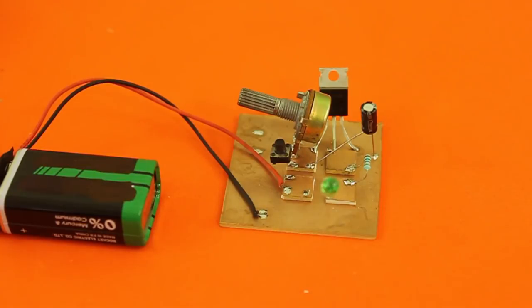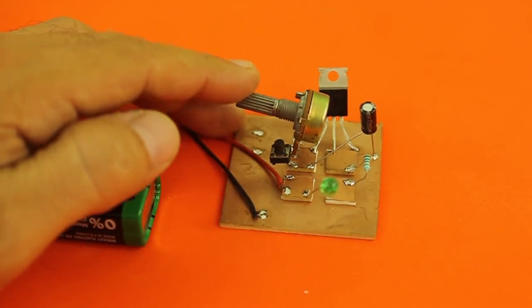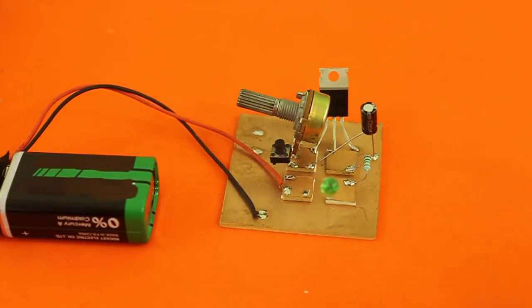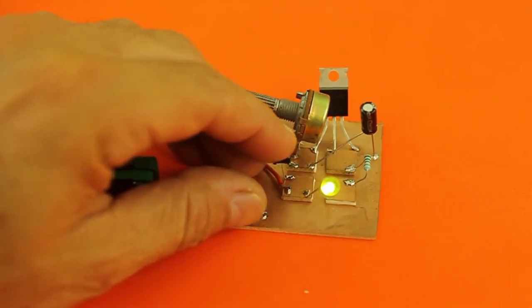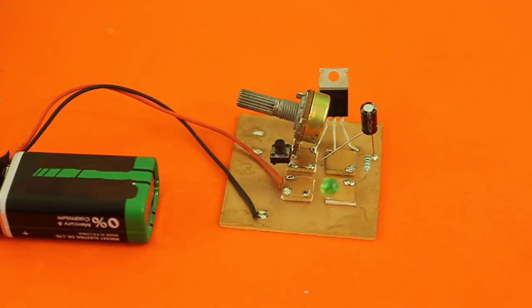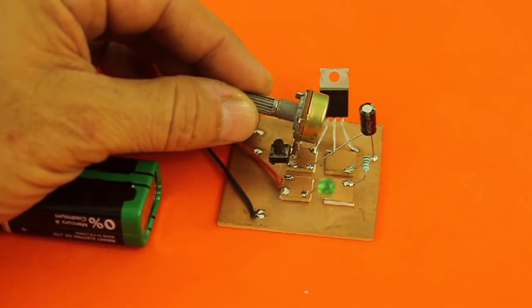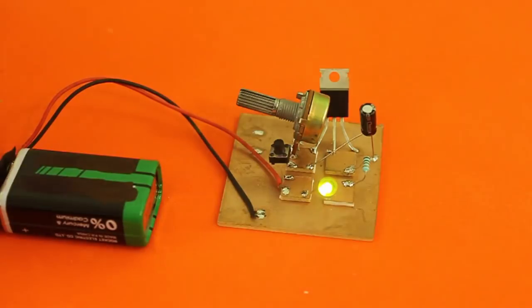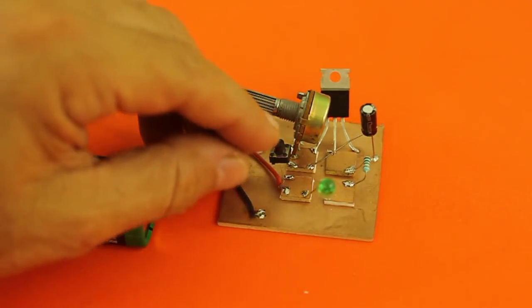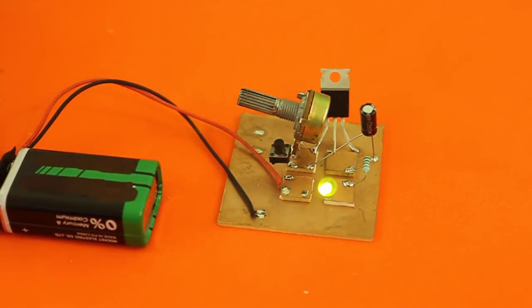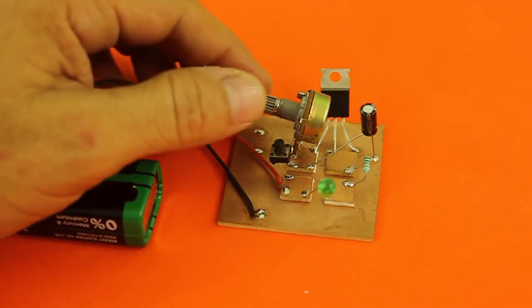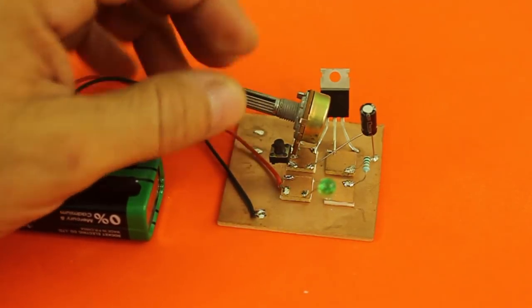Here I replaced the resistor by a 100 kilo ohm potentiometer and the capacitor is 100 micro farad. Let's see. The LED is on for less than a second, but now we can control the time by adjusting the potentiometer. With more resistance we get more time.